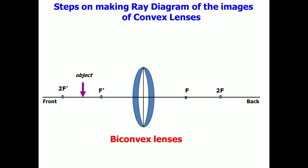Now that you are familiar with the basic parts of the ray diagram, let us discuss now the steps on how we draw the ray diagram for convex lenses. Once more, we are using bi-convex lenses. And for this diagram, our object is represented by this downward arrow with purple color.